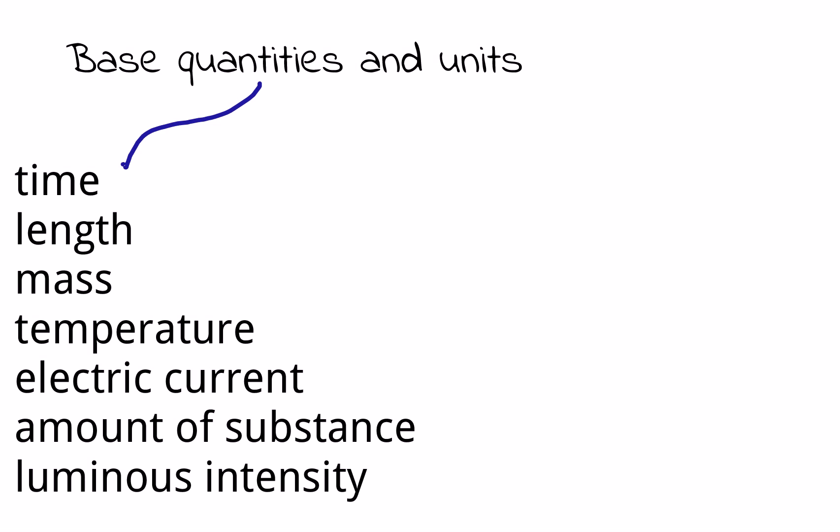So for example, 12 meters means 12 multiplied by the length of one meter, or nine kilograms means nine multiplied by the mass of one kilogram. What do we mean by one meter and one kilogram? Meters and kilograms are two of the seven internationally agreed base units.